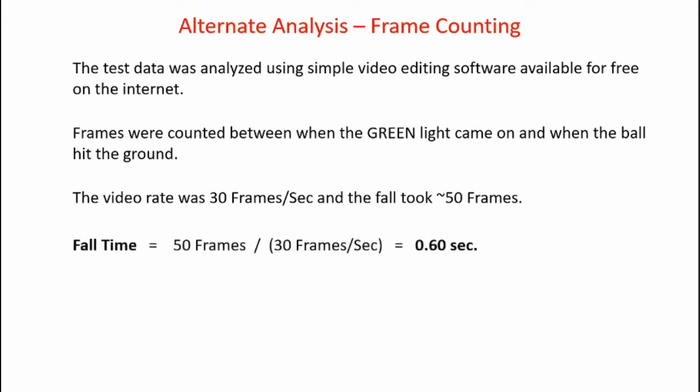The video was filmed at a rate of 30 frames per second and the fall took approximately 50 frames. We calculate the fall time by dividing the number of frames, 50, by 30 frames per second. And that results in a fall time of 0.60 seconds. Now that's very close to the 0.61 seconds that was calculated theoretically.